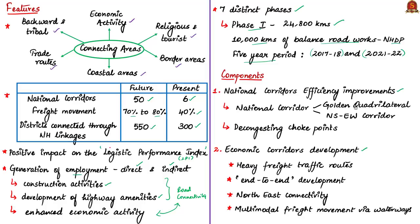Bharat Mala envisages improving the efficiency of the National Corridor, which consists of the Golden Quadrilateral and the North-South and East-West Corridor. This will be done by decongesting choke points — narrow routes providing passage through another region — through lane expansion, construction of ring roads, bypasses or elevated corridors and logistics parks. The program has identified around 26,200 km of economic corridors with heavy freight traffic, to be developed end-to-end to ensure seamless and speedy travel and uniformity in standards.